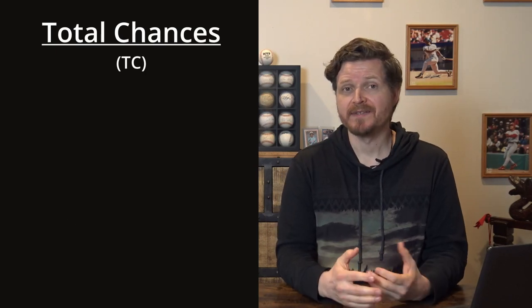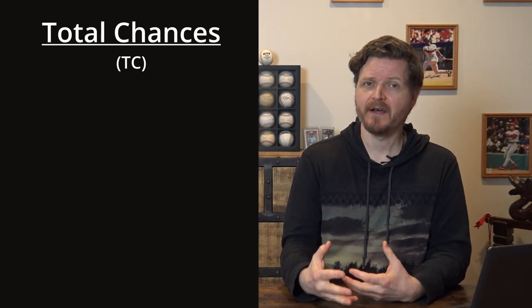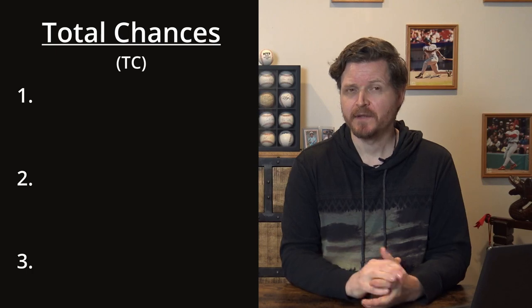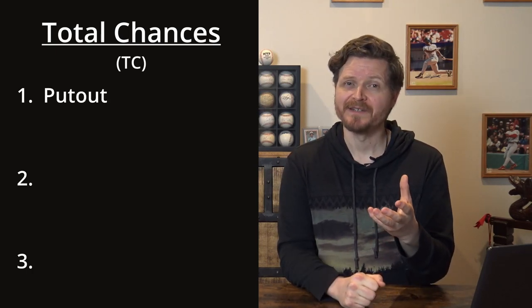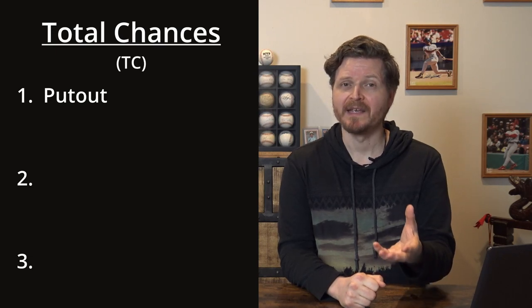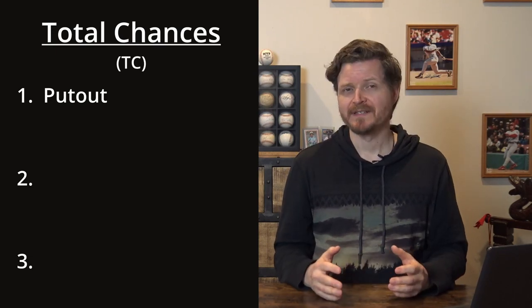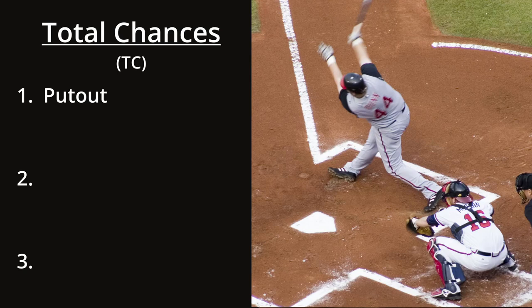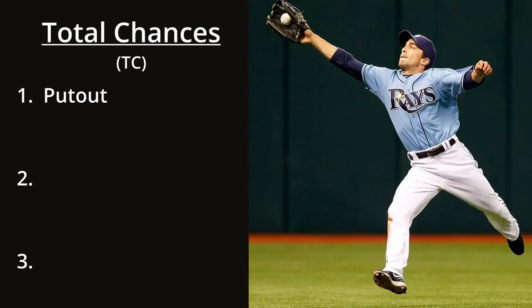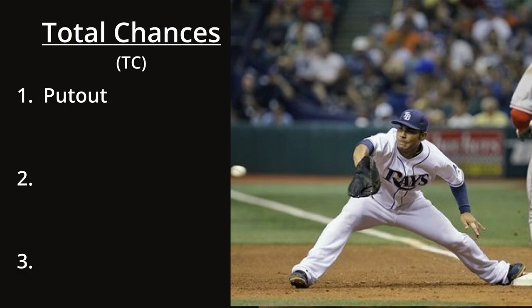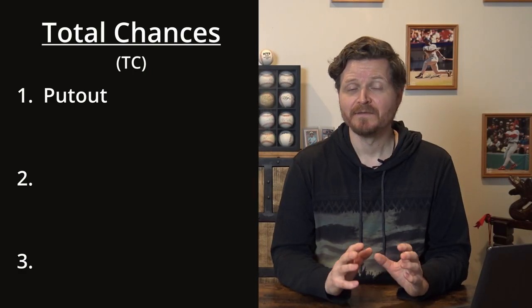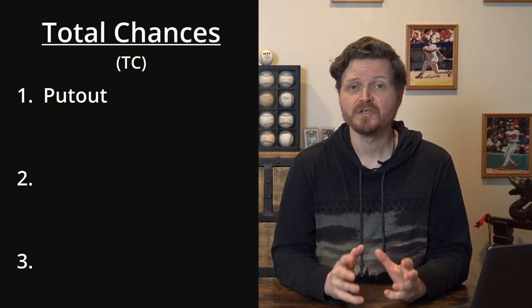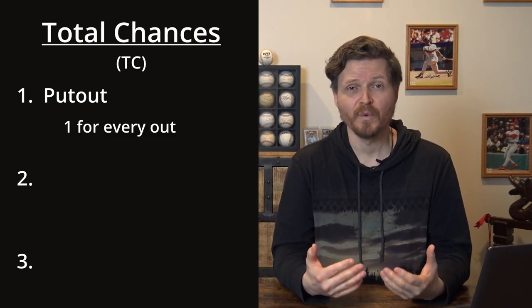If a player is given a chance, it's divided into one of three buckets. The first is the put out — when a player is directly responsible for making an out. Primary examples are a catcher catching a third strike, an outfielder catching a fly ball, a first baseman catching a throw to beat a runner, or an infielder tagging a runner out. For every out in a game, a put out is credited to one fielder.